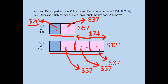Everything given in the question is consistent with the picture. The longer pink bar is three times the smaller pink bar — that's why Cindy has three times as much money as Beth. The amount of money Ann has is the same in both cases. By subtracting Ann and Beth's total from Ann and Cindy's total, we find the difference, which is $74. So the answer is Ann has $20.